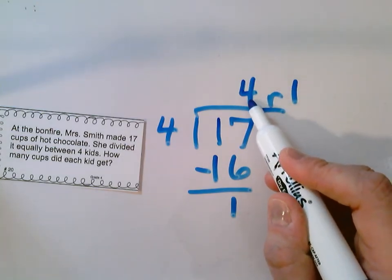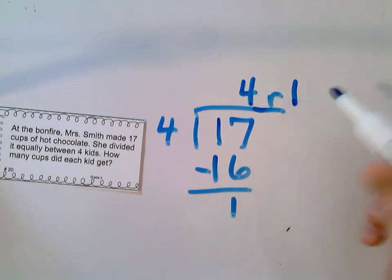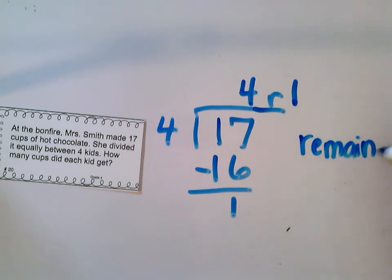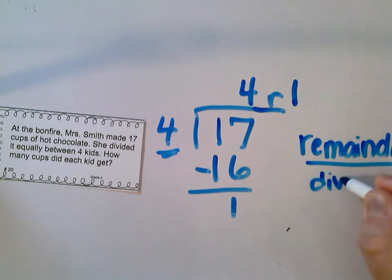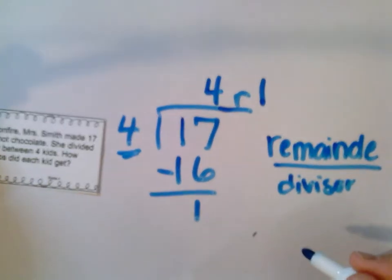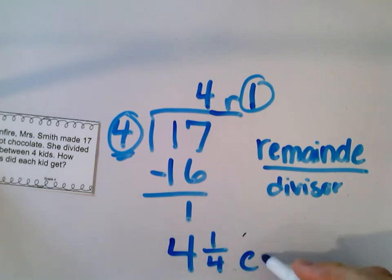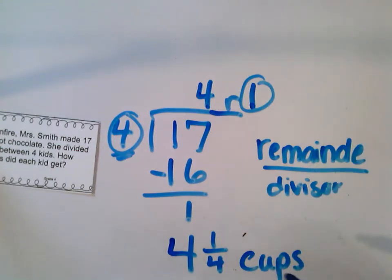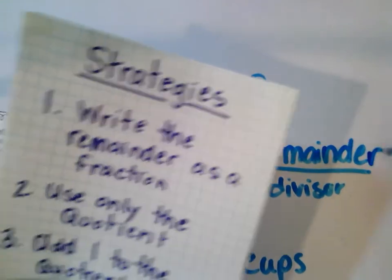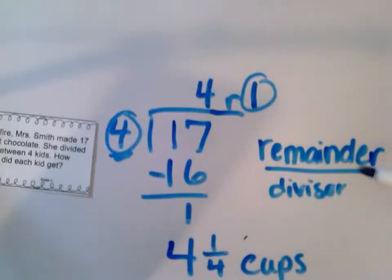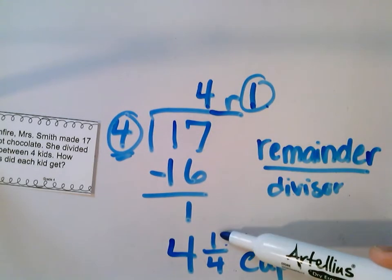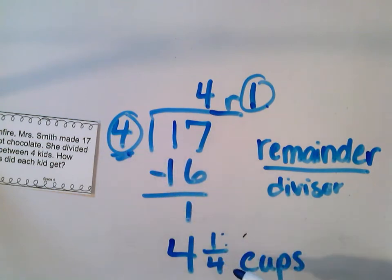Every kid is getting 4 cups, and I'm going to change this into a fraction. My remainder goes on top of my fraction and my divisor on the bottom. So my answer would be every kid can get 4 and 1/4 cups of hot chocolate. That is the first strategy — writing the remainder as a fraction. We put the remainder on the top and our divisor, the number we were dividing by, on the bottom. So we have 4 and 1/4 cups.